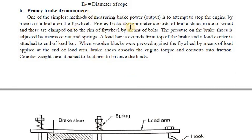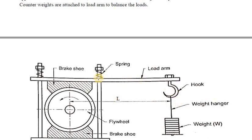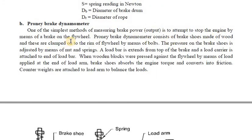One of the simplest methods of measuring brake power is with the Prony brake dynamometer — by attempting to stop the engine by means of a brake on the flywheel. When the engine starts, the flywheel rotates; we can stop it by applying the brake. We apply load on the load arm, which transfers pressure to the brake shoes, which press against the flywheel and try to stop its rotation. The Prony brake consists of wooden brake shoes clamped on the rim of the flywheel by bolts, with pressure adjusted by a nut and spring.